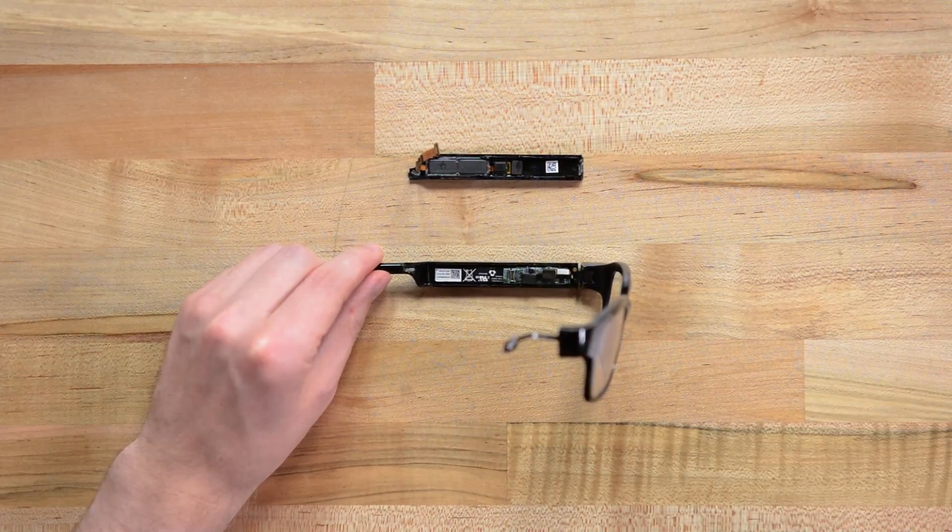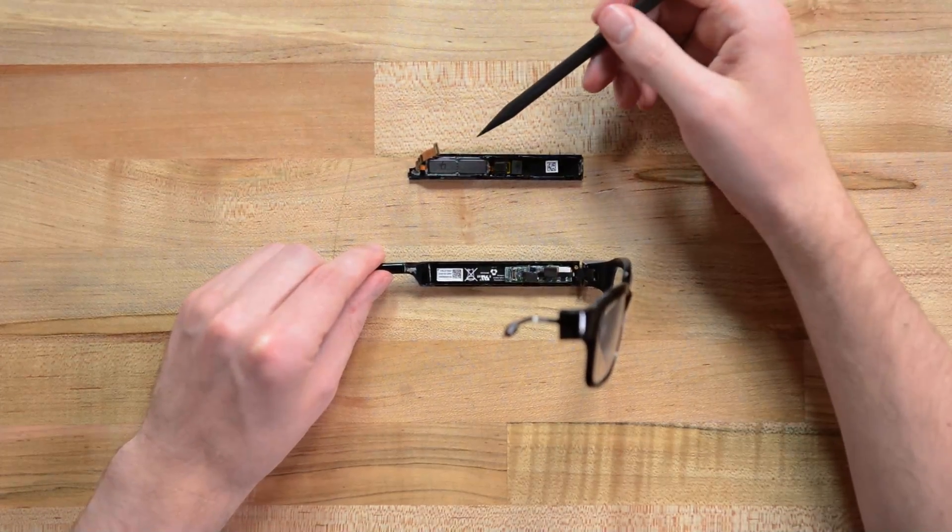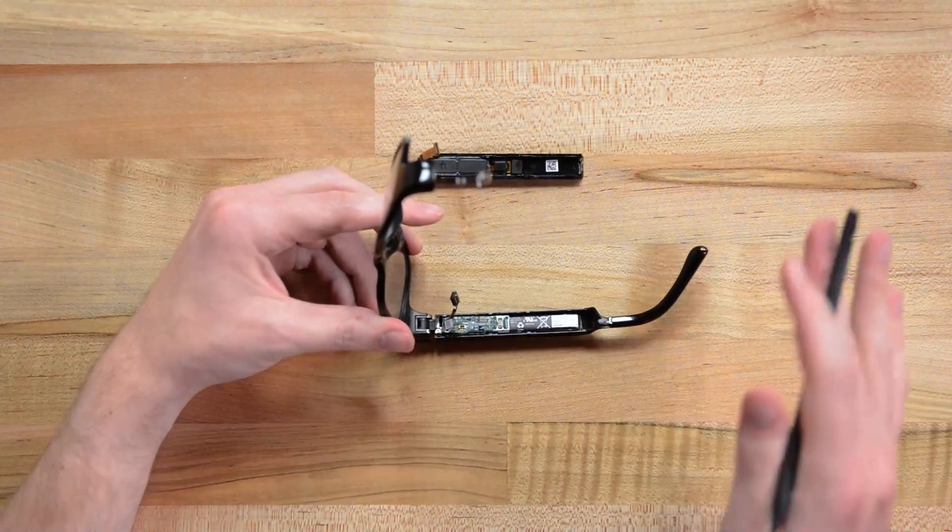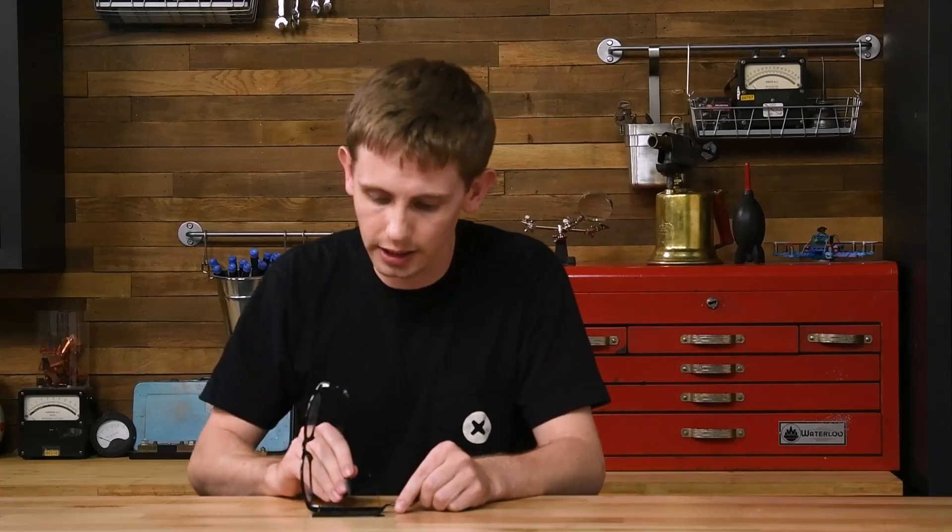Inside the other arm we've got two more micro speakers and then the battery. If I would have known the battery was in this arm I would have started here so that we could disconnect the battery before doing any disassembly. Before I can see just how small this battery is though I'm going to need to get this board out of the way.